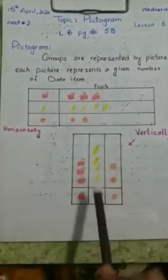Do you know what is a pictogram? Groups are represented by pictures. Each picture represents a given number of data. We can show represented data by pictures in a group. It can be shown horizontally or vertically. Through pictures we can tell how much data we have.